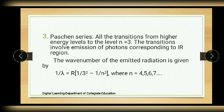The third one is the Paschen series. All transitions from higher energy levels to the third energy level (n = 3) give the Paschen series. These transitions involve emission of photons corresponding to the IR region.